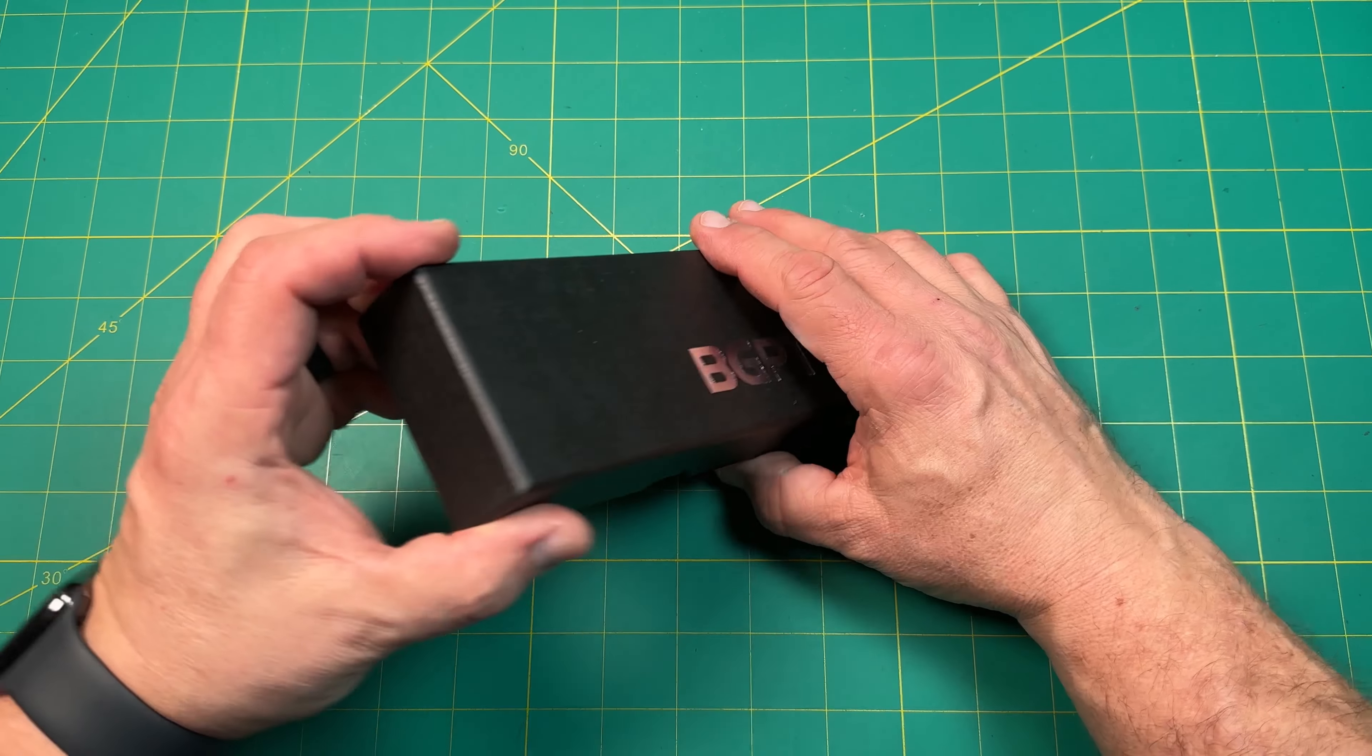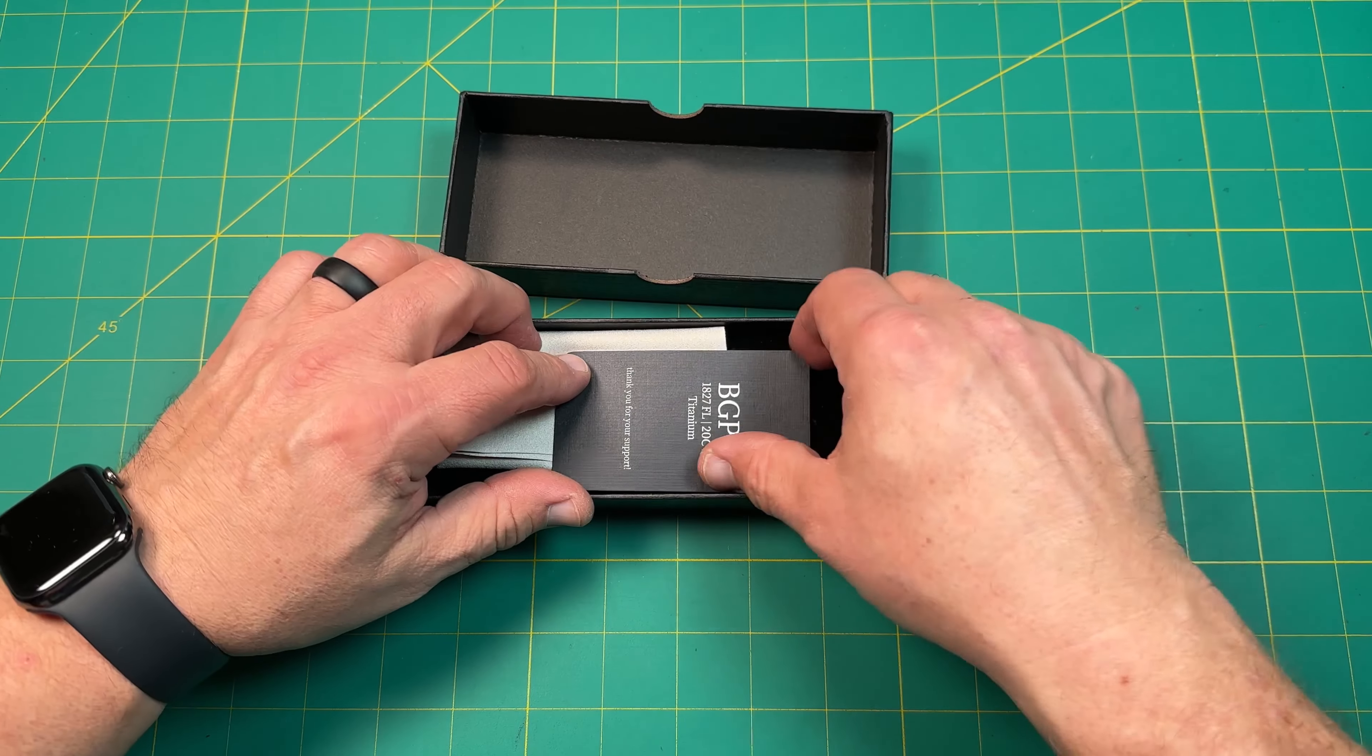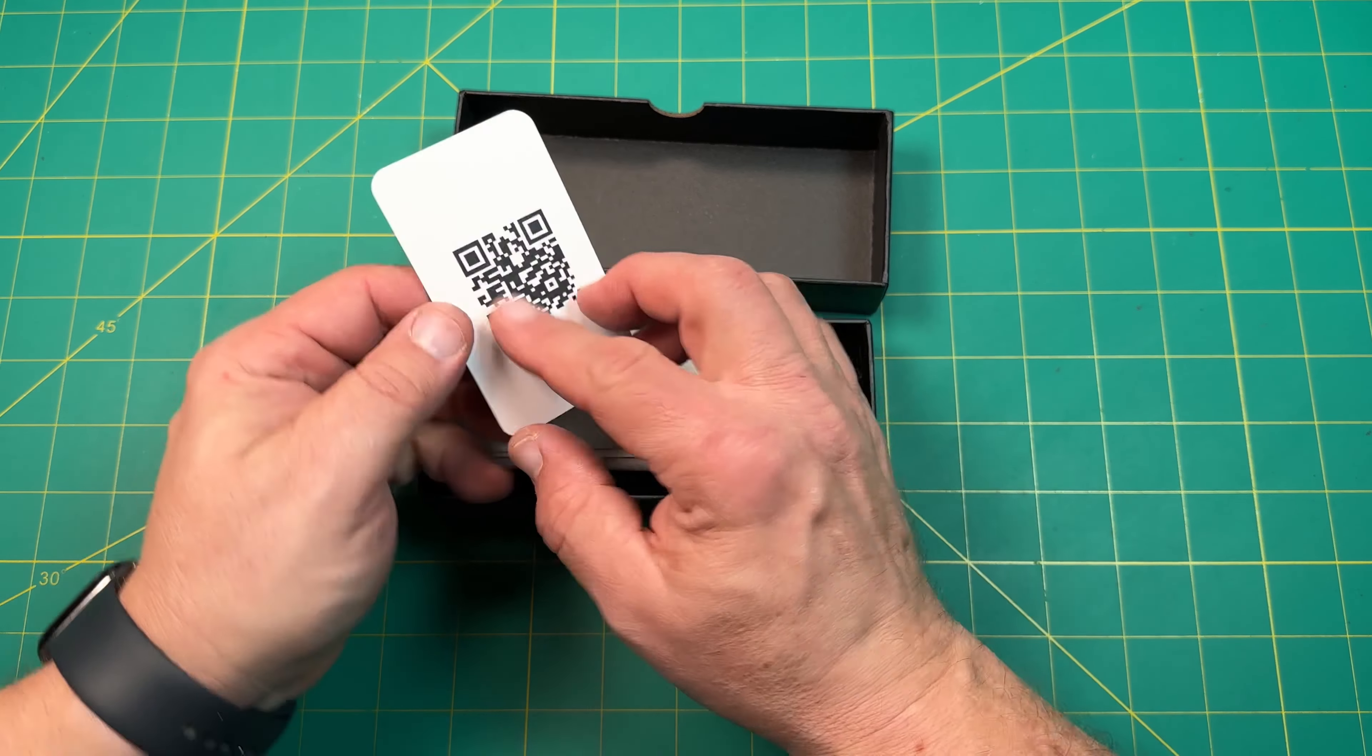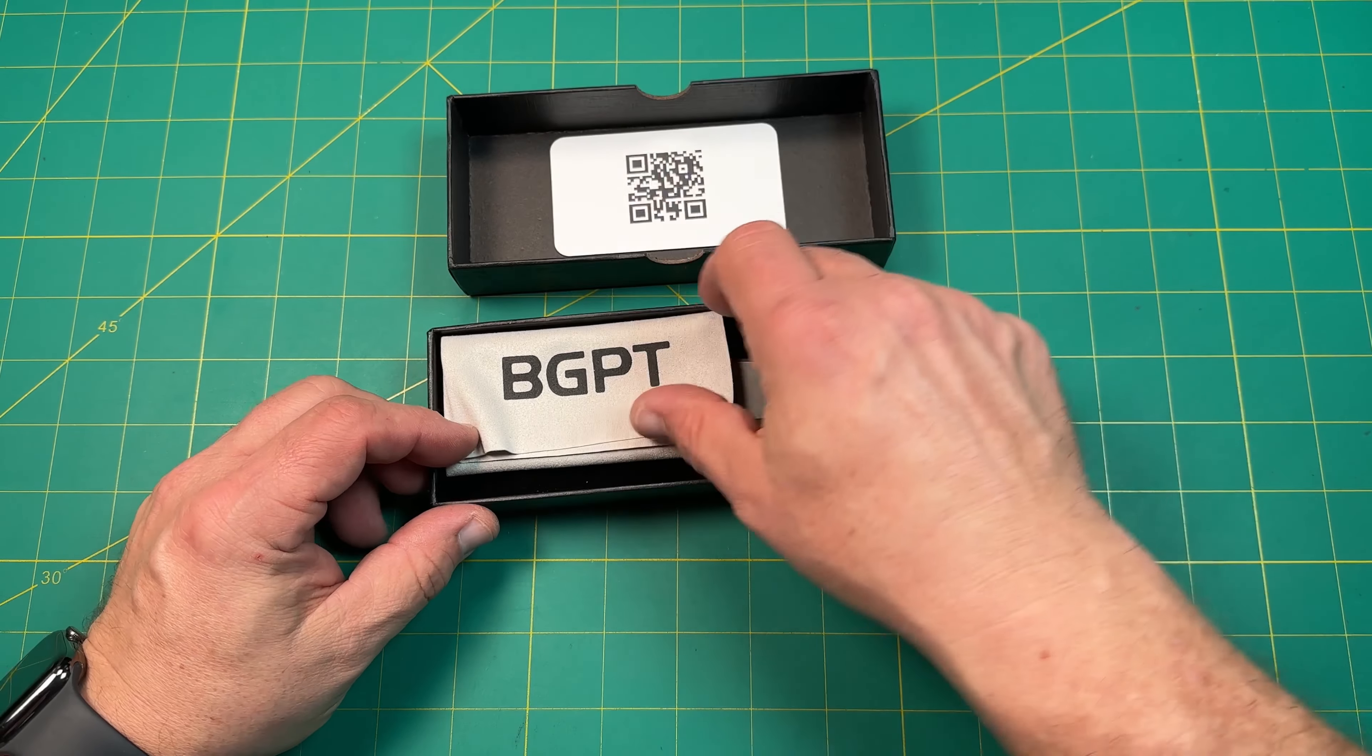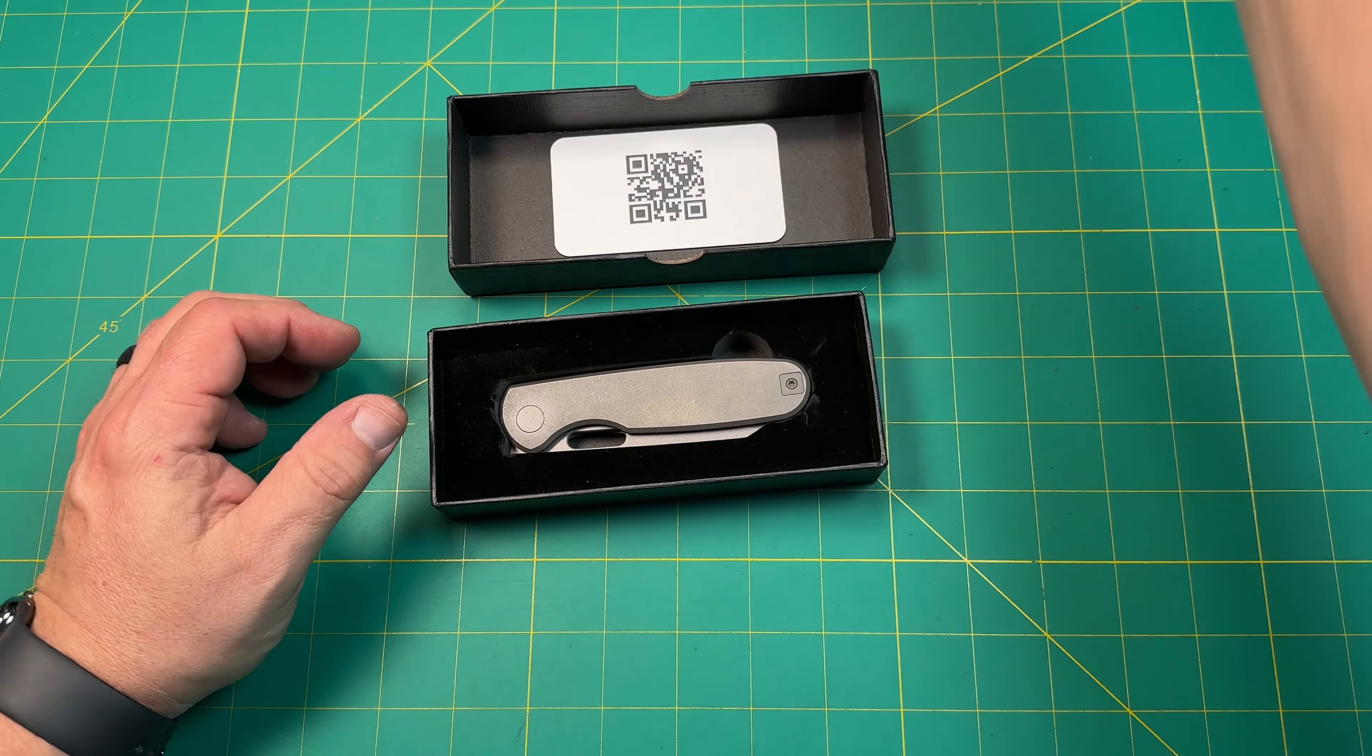So what we have here, this looks like it's a Bridgeport design knife, so let's go ahead and take a look. Bridgeport 1827 20CV titanium. Thanks for your support. A little barcode if you want to take a look. Nice little cleaning cloth. That's actually a really nice one, so that's cool. We'll keep that.